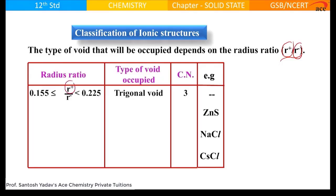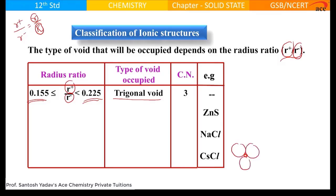If your cation size compared to anion size — R+ upon R− can also be remembered as r upon R, where r is the size of the void and R is the radius of the sphere making up that void. This is the trigonal void size, this is the tetrahedral void size. So if your size is lying between trigonal void and tetrahedral void, it will go into trigonal void. If this is the arrangement, this is how the trigonal void will be. Imagine the void size is slightly bigger than the trigonal void — still, it will try to fit into the trigonal void by creating some space.